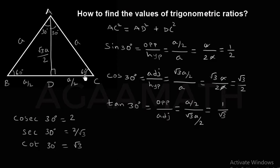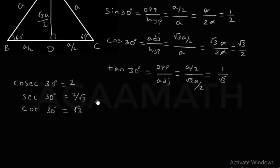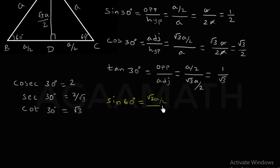Similarly, you can also use 60 degrees. Now I go with the ratios for angle 60 degrees, which is here at angle C. Sine 60 degrees is nothing but opposite by hypotenuse. Its opposite side is √3·a/2 and its hypotenuse is a. When you simplify it, you get √3/2. This is sine 60 degrees.